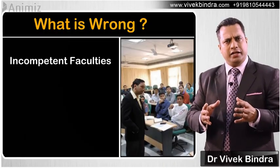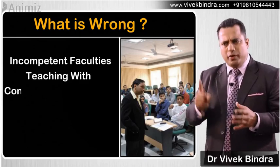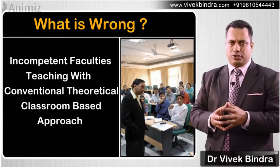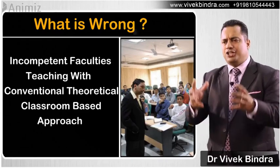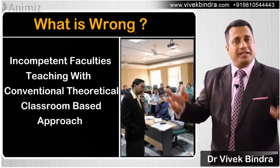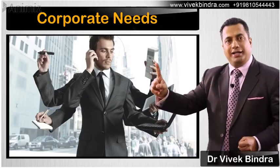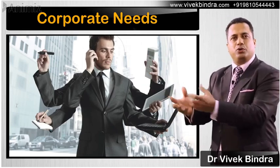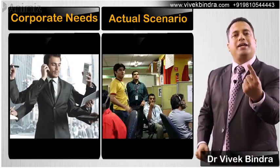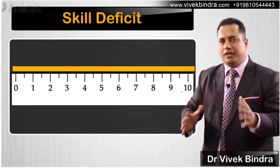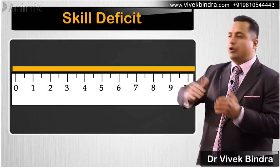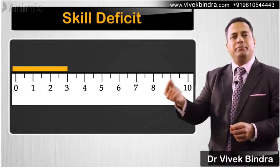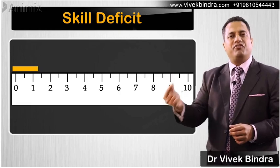Incompetent faculties teaching with a conventional theoretical classroom-based approach — what is the effect? Today corporates want to hire one person who can do the work of five. But the students being produced are such that if you hire five, not even one can do the work. Their skill deficit is so large that on a scale of 1 to 10, even after MBA or engineering, their skill level is not even 1.5 out of 10.